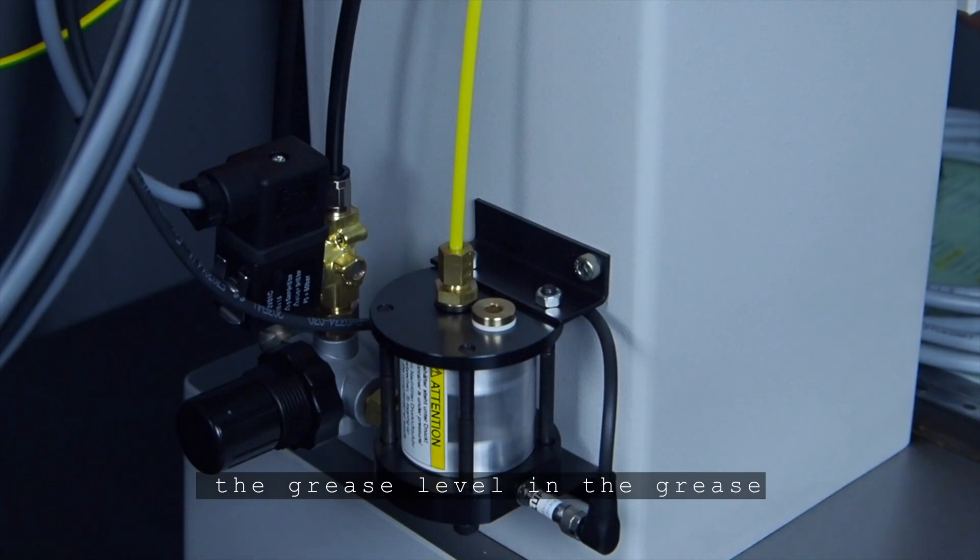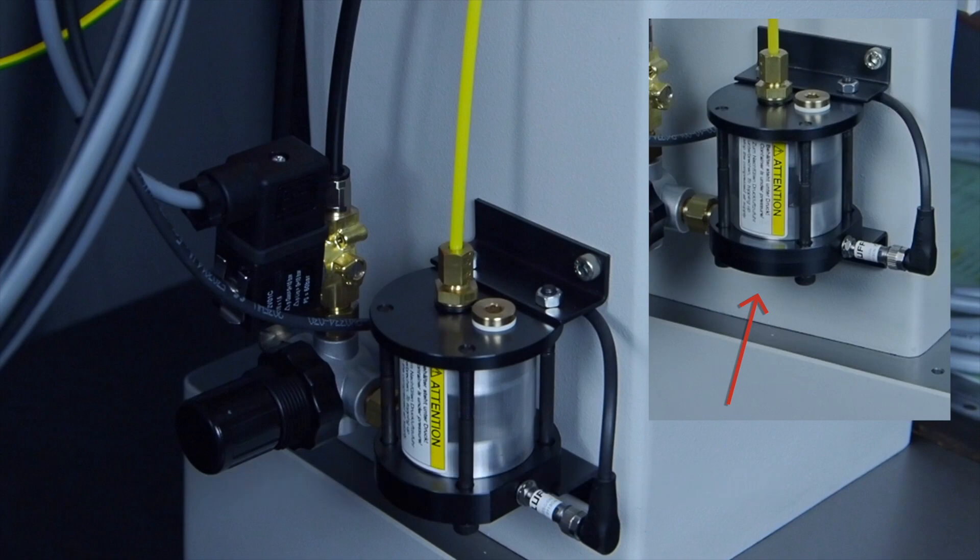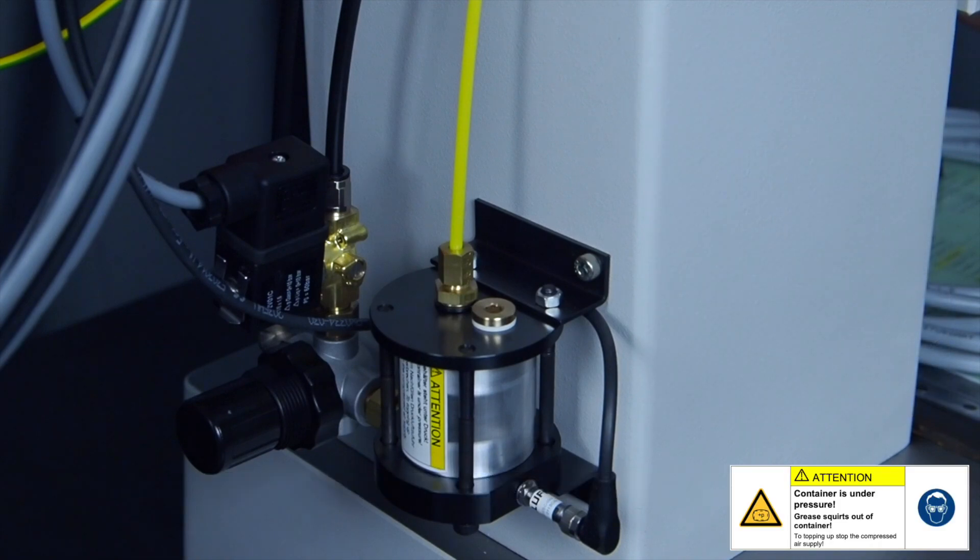The grease level in the grease container can be determined from the position of the piston. When the end protrudes less than 4 mm out of the container cover or when a corresponding indication appears on the control unit display, the grease container must be topped up as follows.